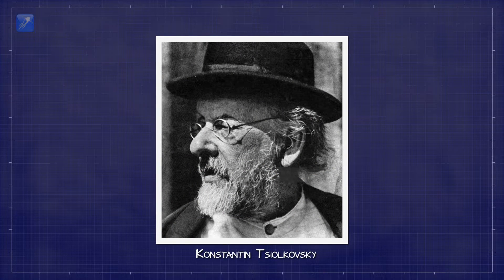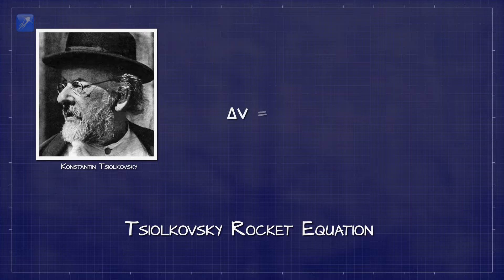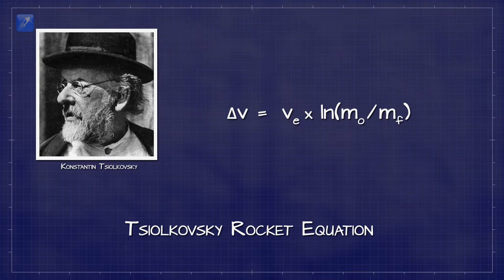Russian rocket scientist Konstantin Tsiolkovsky came up with his rocket equation, which tells us that the change in velocity achievable for rockets is equal to the engine exhaust velocity times the natural log of the initial mass divided by the final mass. What this means in simpler terms is that the greater the difference between the starting and ending mass of the rocket, the greater the maximum speed of the rocket will be. For suborbital rockets, the higher speed generally indicates a higher peak altitude will be achieved.